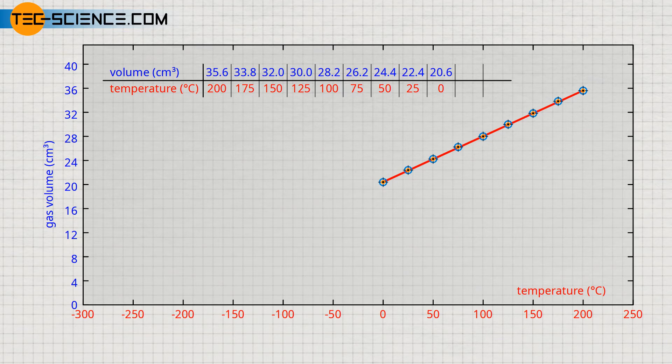For this purpose, the straight line in the diagram is continued for ever smaller volumes, also called extrapolation, until finally the smallest possible volume of zero is reached at the point of intersection with the temperature axis.